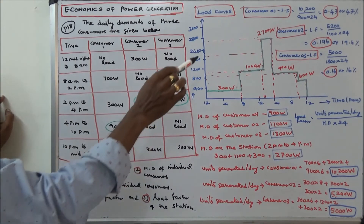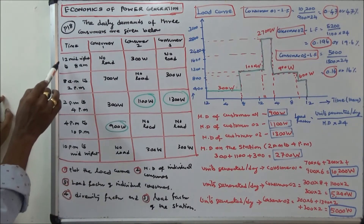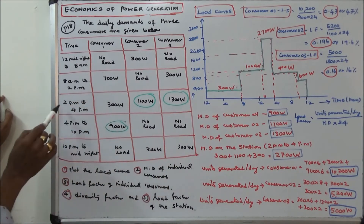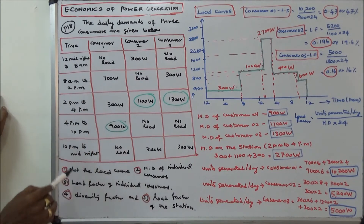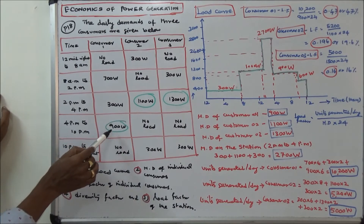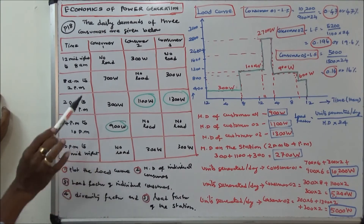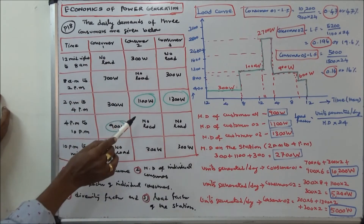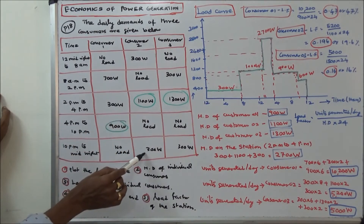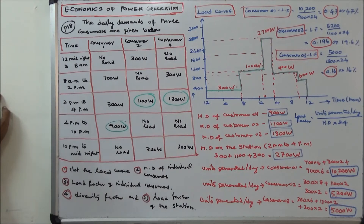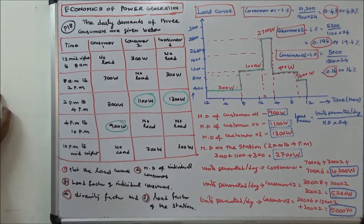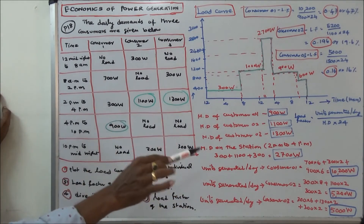Next, calculate units generated per day for each consumer. Consumer 1: 8 AM to 2 PM = 700×6; 2 PM to 4 PM = 300×2; 4 PM to 10 PM = 900×6 → total 10,200 watt-hours. Consumer 2: 300×8 + 1100×2 + 300×2 = 5,200 watt-hours. Consumer 3: 300×6 + 1300×2 + 300×2 = 5,000 watt-hours.